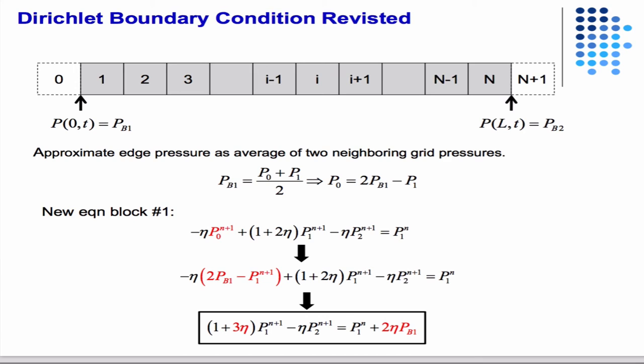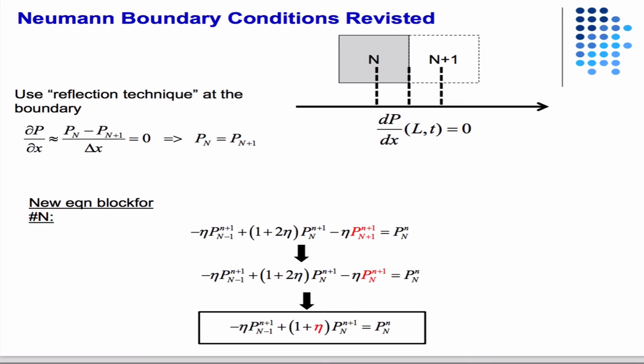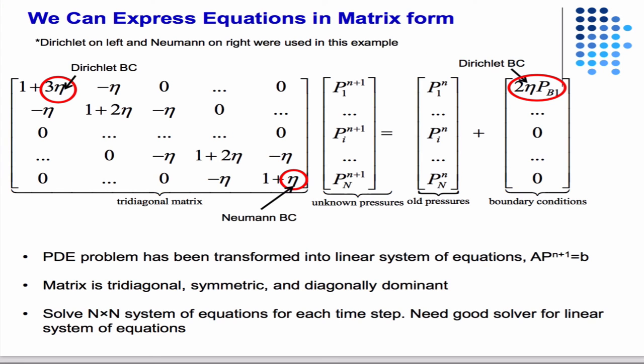Making the modification for the boundary conditions, constant pressure on the right gives you this 1 plus 3 eta term. But understand how we did that, because I could ask you something different. No flow on the right gives you this. Plug those into the matrix, and we get this. Then we can solve this as a linear system of equations.